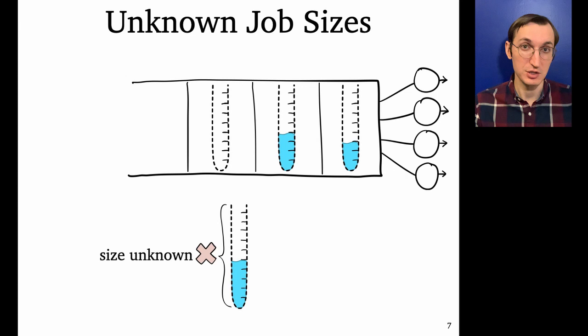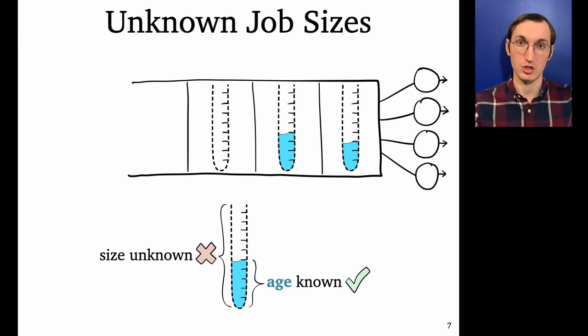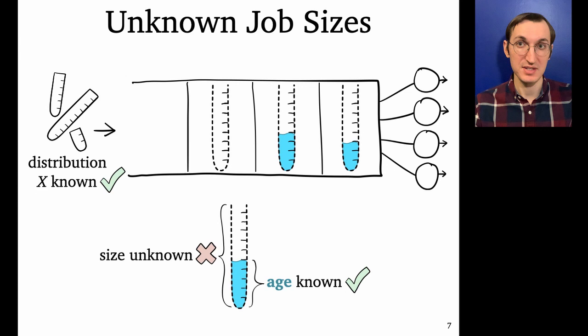So what do we have? Well, we can track how long we've served each job so far. So we can figure out each job's age. And by looking at, for example, historical data, it's also reasonable to assume that we know the distribution of job sizes. So scheduling with unknown job sizes amounts to leveraging the job size distribution X and each job's age in order to make smart scheduling decisions.